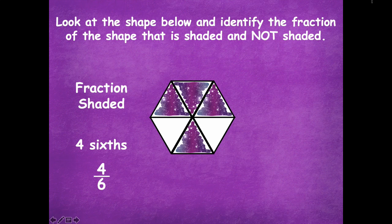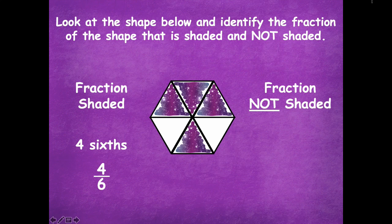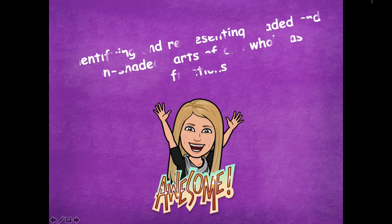Notice that the four on top in our numerical fraction is the number of parts that are shaded, and the bottom is the total number of equal parts. For the fraction that is not shaded, let's count those parts — remember it's in sixths: 1/6 and 2/6. In this fraction, two represents the part that's not shaded and six represents the total number of equal parts.